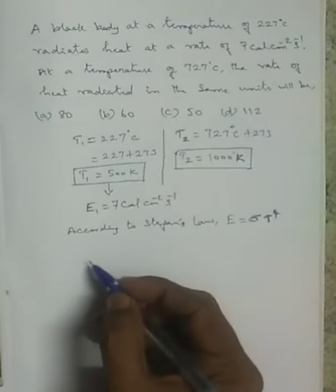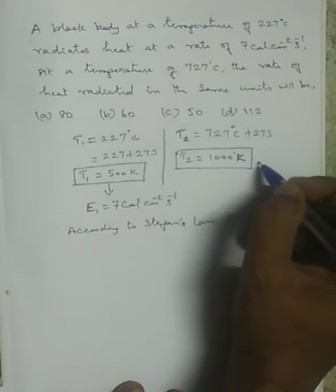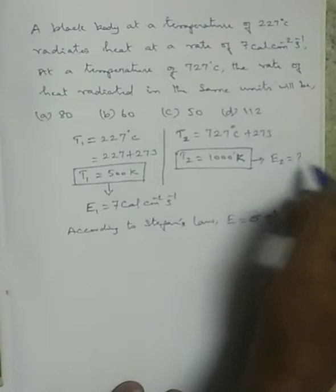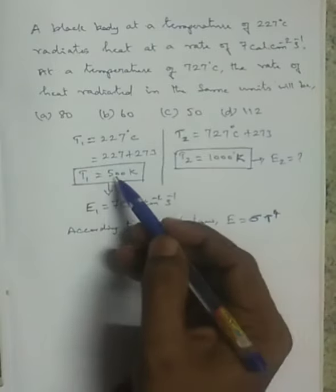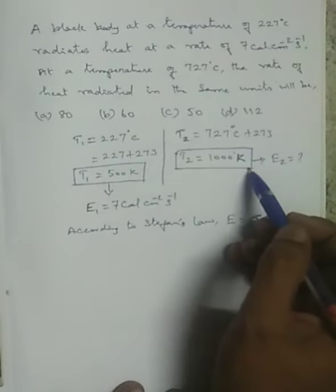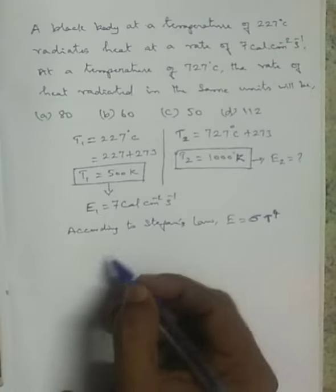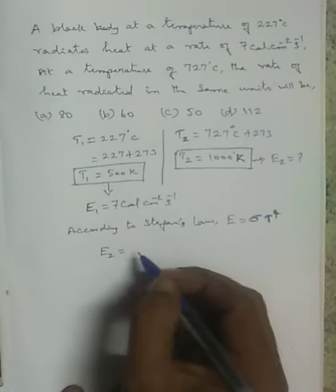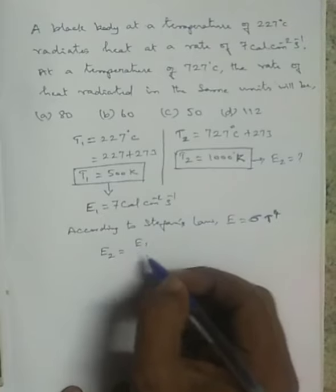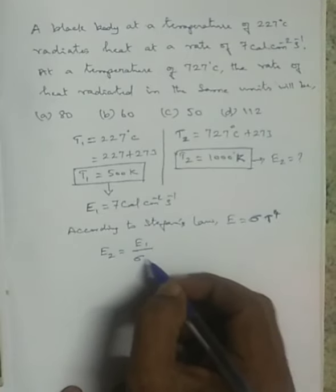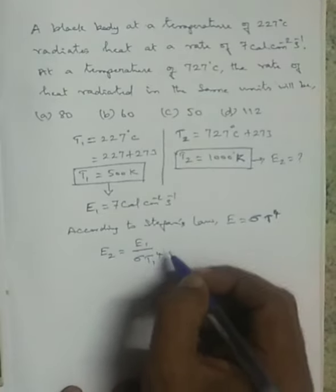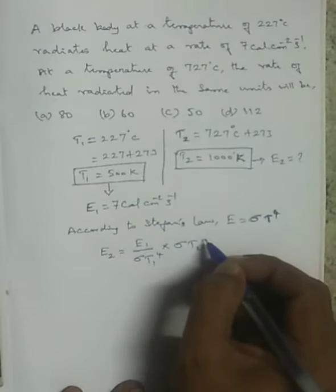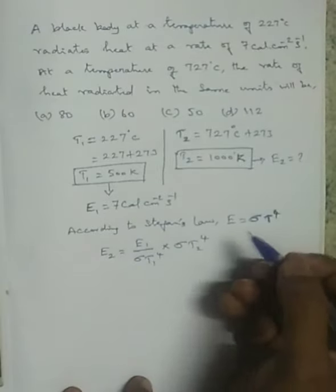Now, this is the energy E. We set up the ratio: E1 divided by E2 equals sigma T1 to the power 4 divided by sigma T2 to the power 4. T1 is the first temperature and E1 is the first energy.